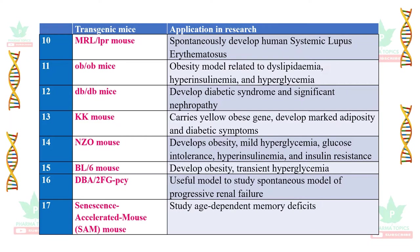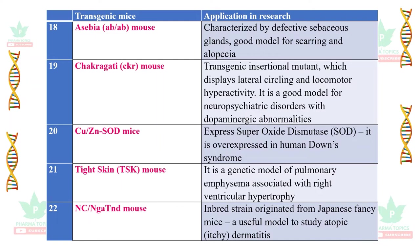The BL6 mouse develops obesity and transient hyperglycemia. The dba2fg/PCY mouse is a useful model to study spontaneous or progressive renal failure. The senescence-accelerated (SAM) mouse is useful for study of age-dependent cognition defects.